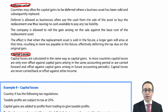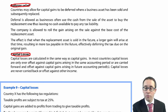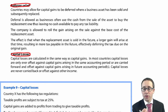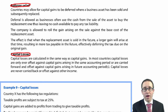Rollover relief as a concept is quite straightforward. What happens is you've disposed of an asset and made a capital gain. Rollover relief gives you a relief — a deduction — if you roll over that gain. However, there are specific scenarios that have to arise for you to be able to roll over that gain and claim relief.